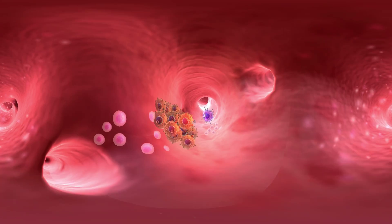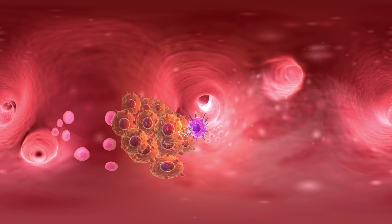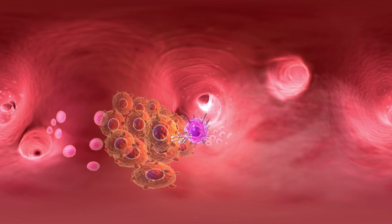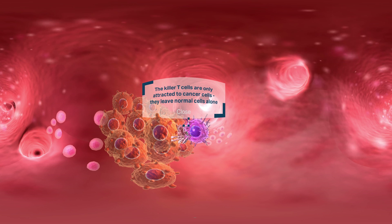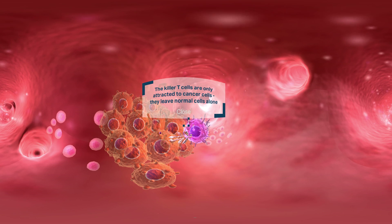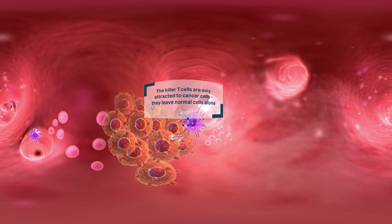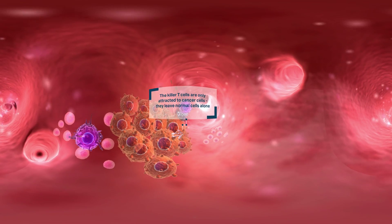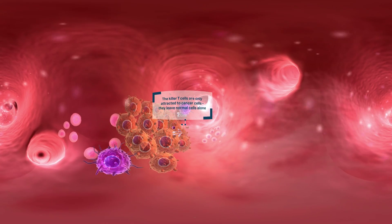The killer T cell finds its target and injects toxic material into the cancer cells. Another T cell arrives and the cancer cells start to die one by one.